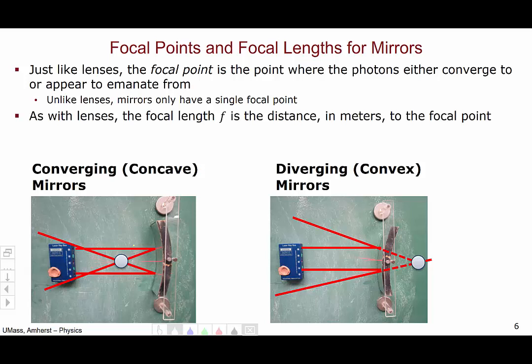As with lenses, the focal length, which we designate by the lowercase f, is the distance in meters from the surface of the mirror to the focal point.